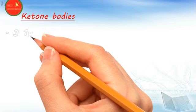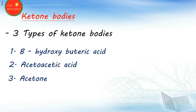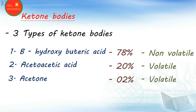There are three types of ketone bodies. The first is beta-hydroxybutyric acid, present in the largest amount at 78% — it is a non-volatile substance. The second is acetoacetic acid, present at nearly 20% and is volatile. The third is acetone, present in a very low amount of nearly 2%, which is also volatile.